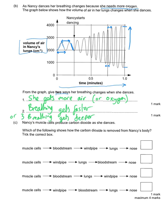The final question says that Nancy's muscle cells produce carbon dioxide as she dances and your body has to get rid of that carbon dioxide. Carbon dioxide is not good for your body to keep inside it. It will feel really weird and you'd feel faint if you didn't get rid of your carbon dioxide. So which of the following shows how the carbon dioxide is removed from Nancy's body?